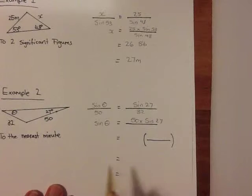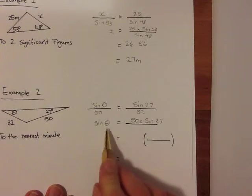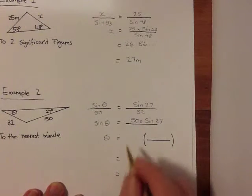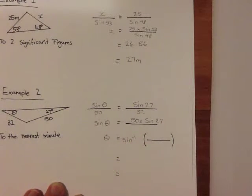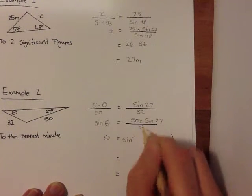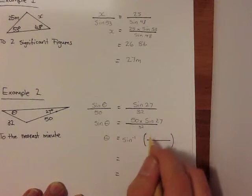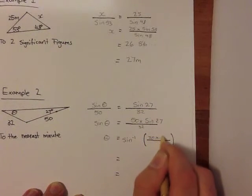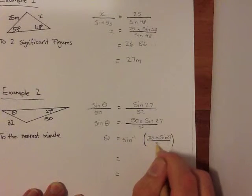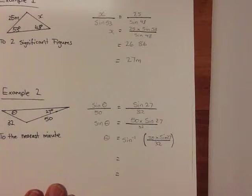Now, like before, to get theta by itself, we need to use inverse sine. So inverse sine, which is shift sine, bracket. Oh sorry, that's meant to be over 32, is equal to 50 times sine 27 over 32.